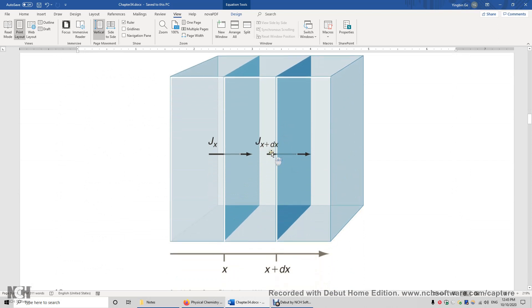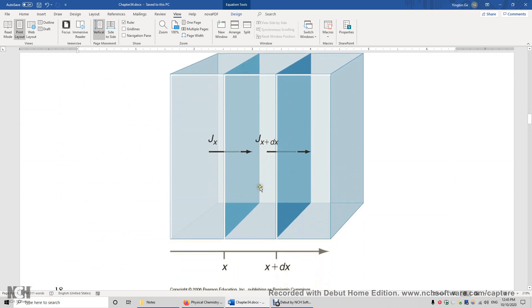So now let's look at this small volume between x and x plus dx. So we have this side length of dx. Inside this volume, we have influx that increases the number of particles in the volume. We have outflux that decreases the number of particles inside this volume.